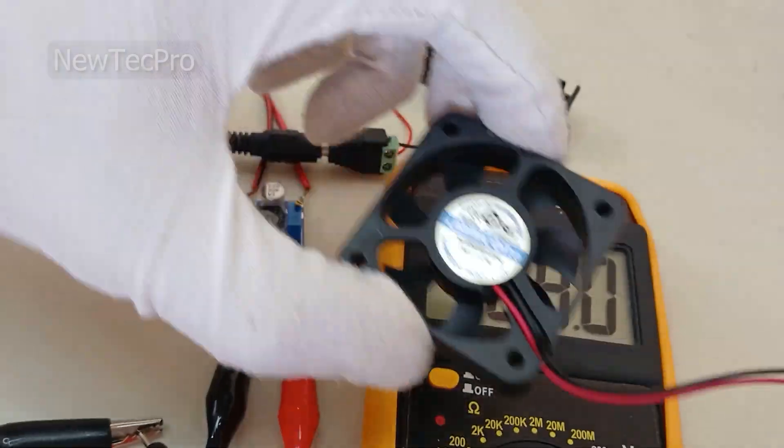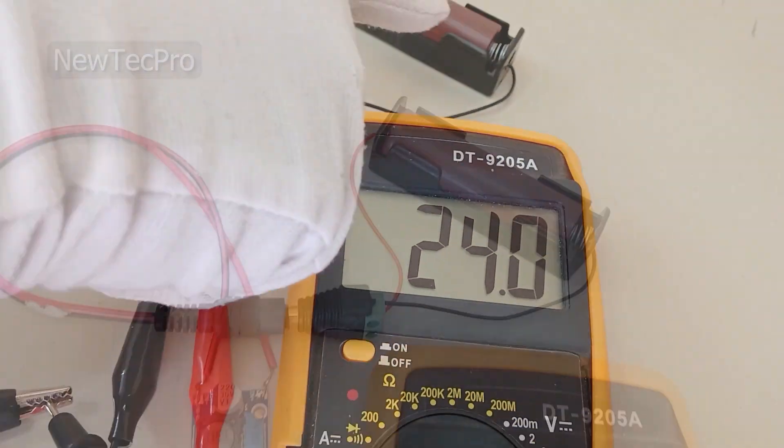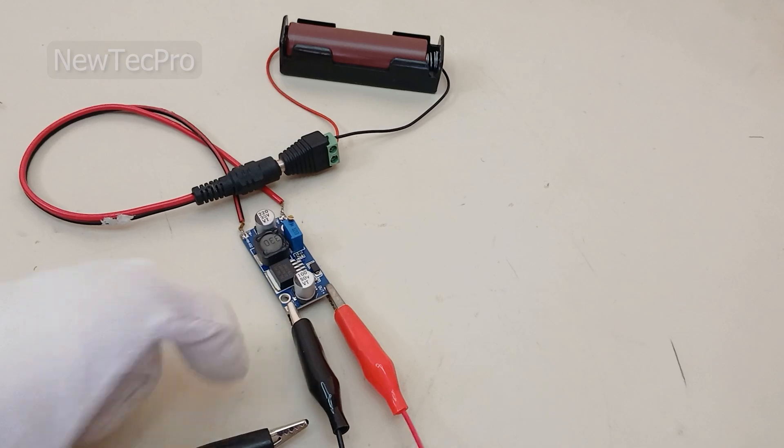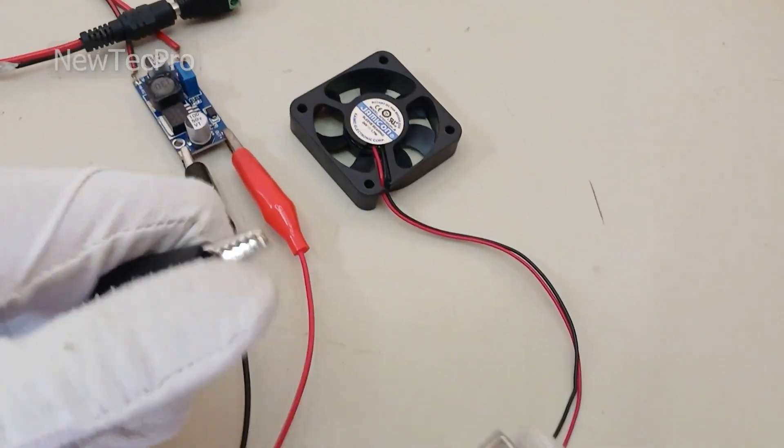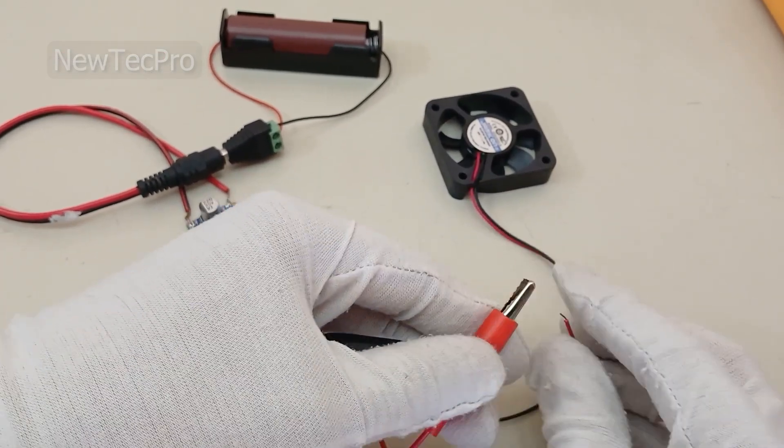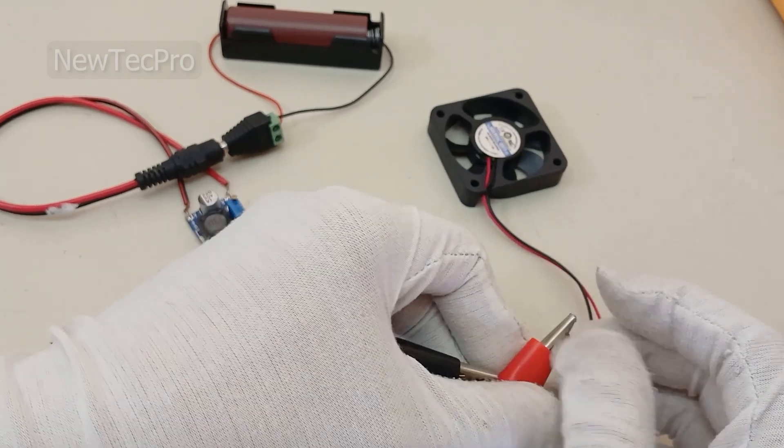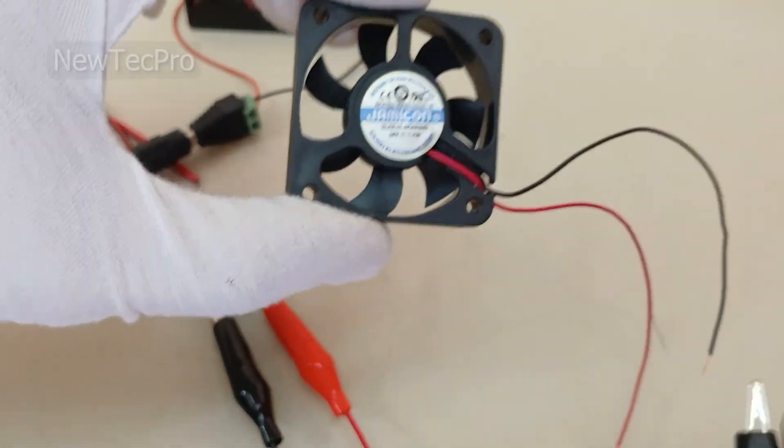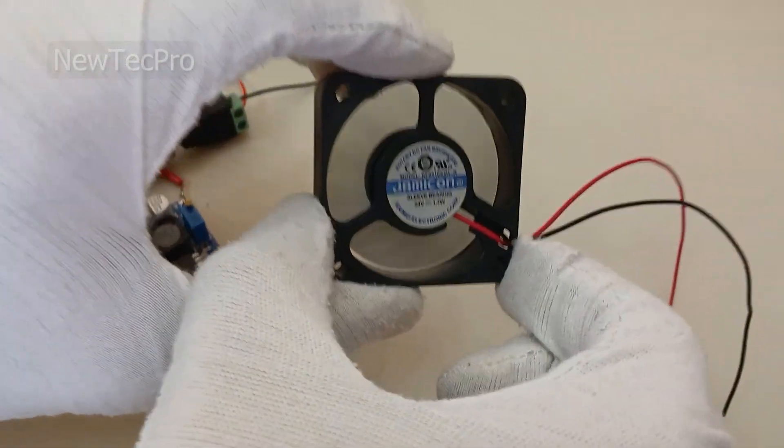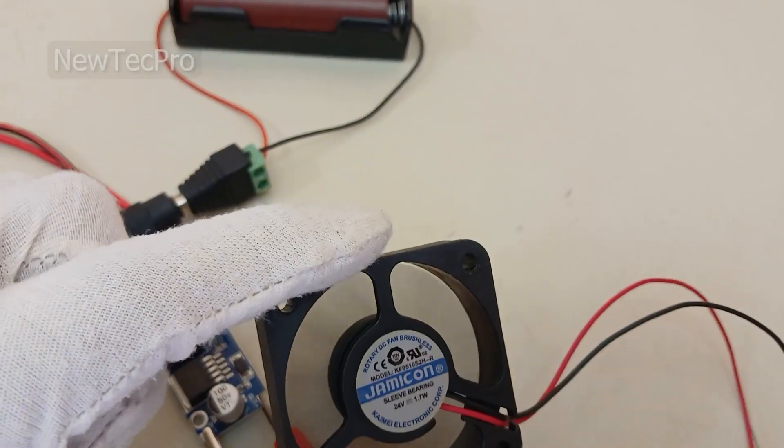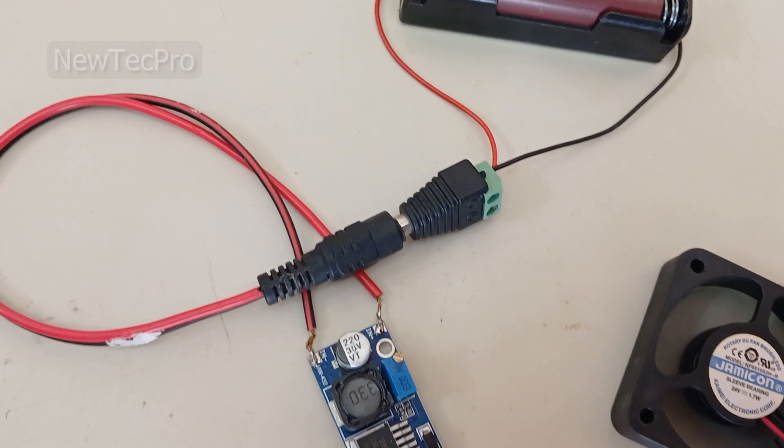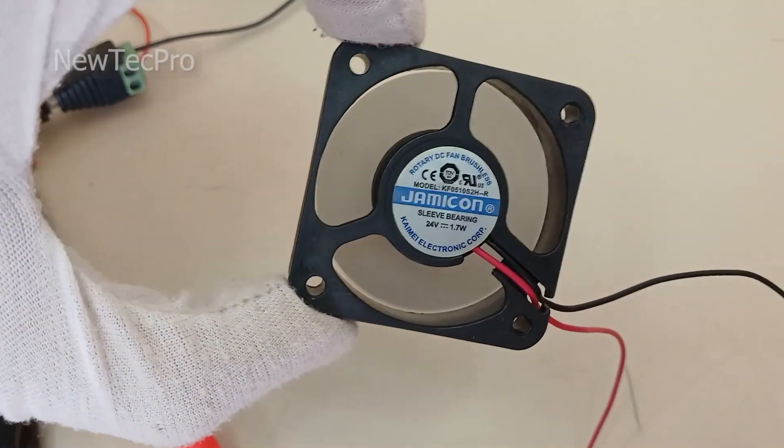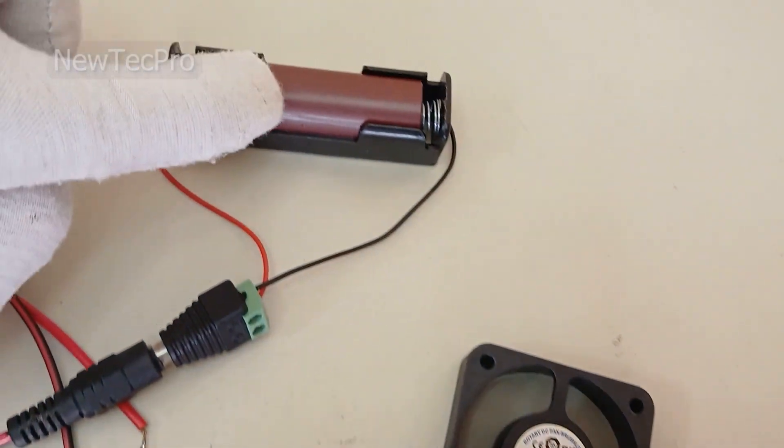Now we'll try to turn on a 24-volt fan with the 3-volt battery. Okay, we don't need the multimeter now. Trying to turn on the 24-volt fan. Okay, you can see the 24-volt fan is turning on with the 3-volt lithium battery. That's good—a 24-volt fan turned on by a 3 or 4-volt lithium battery and the step-up module.